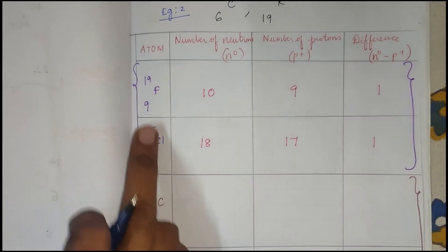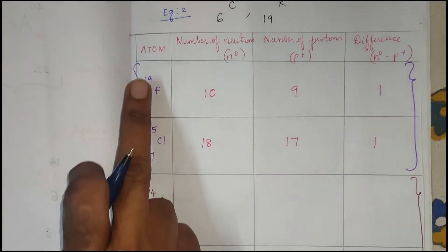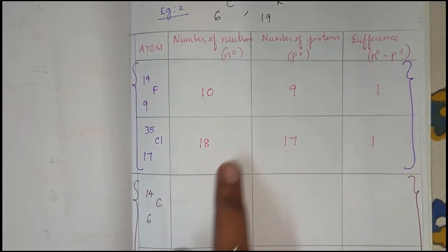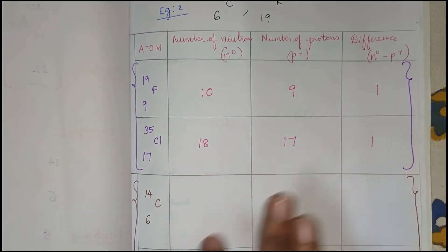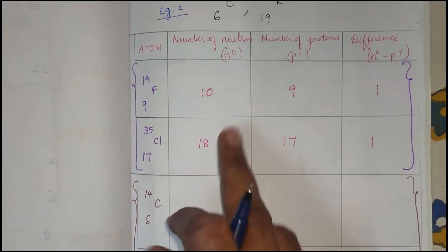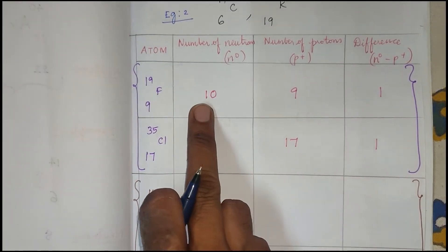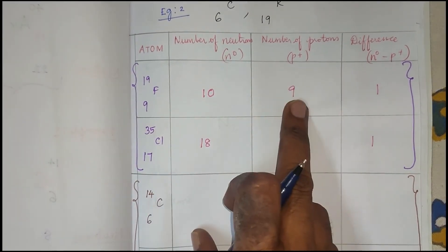The atomic number is not the same, and the mass number is not the same. The number of neutrons and the number of protons are not the same either. But if we subtract the number of neutrons and the number of protons, the difference is equal.